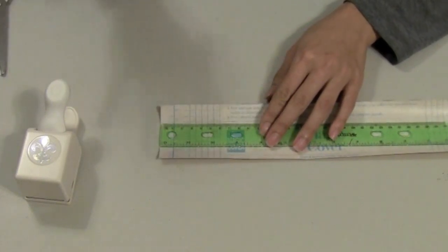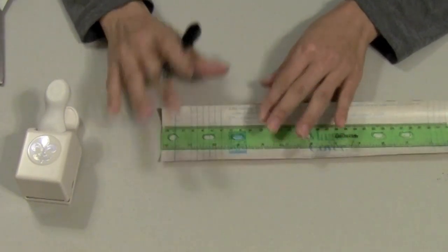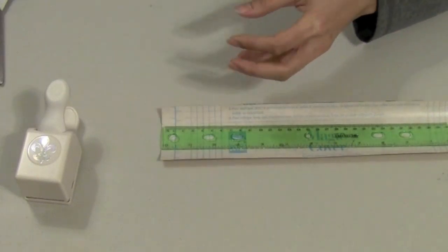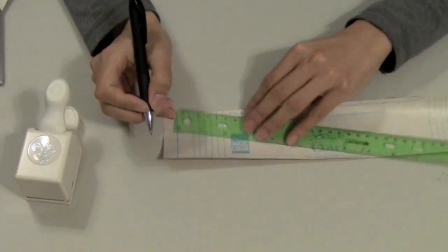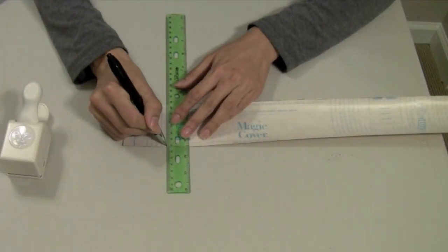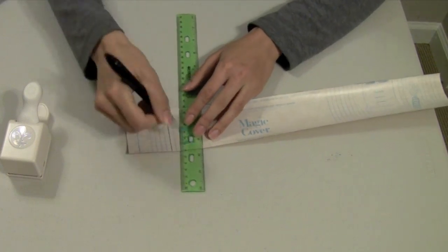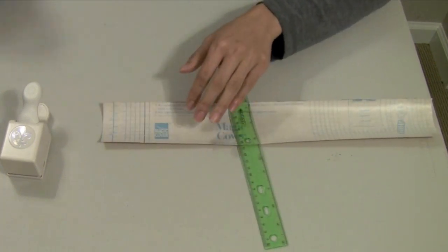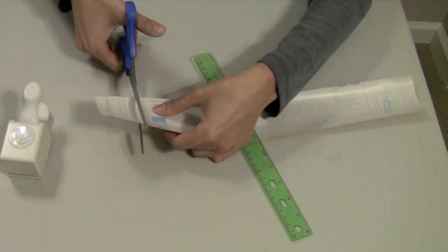You don't want to make it too big because it will start curling around your wine glass, but you don't want to make it too small. So I'm just going to draw this line right here and then we'll just continue doing this all the way down, but for right now I'm just going to cut out one.